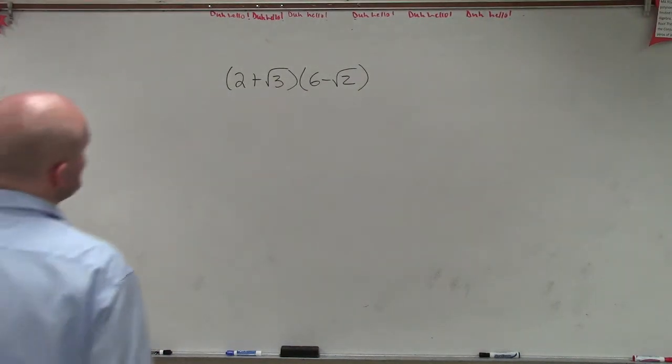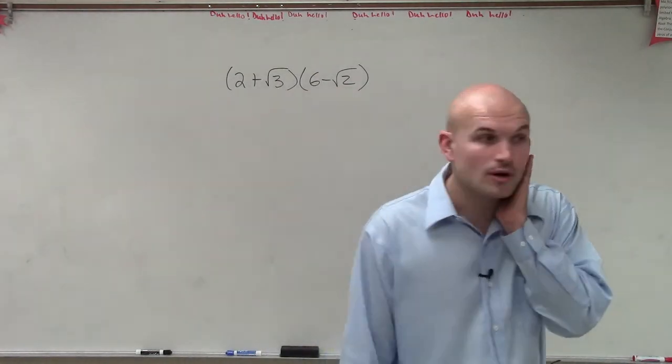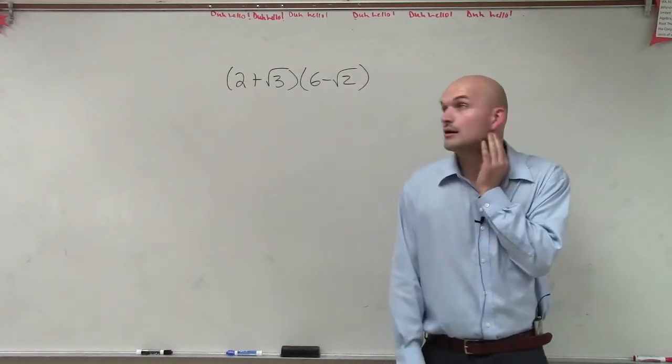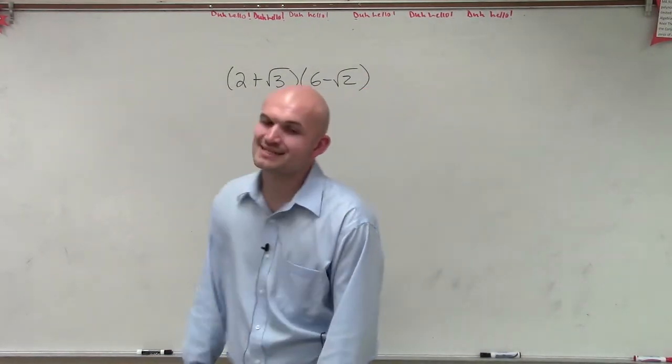OK. So I have 2 plus the square root of 3 times 6 minus the square root of 2. So what we're going to do for this is 2 plus the square root of 3 times 6 minus the square root of 2.